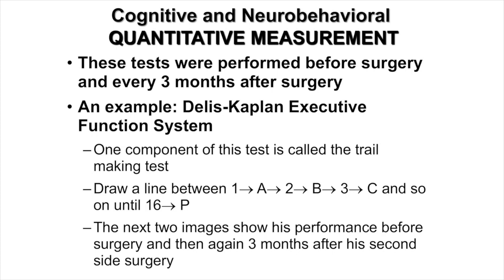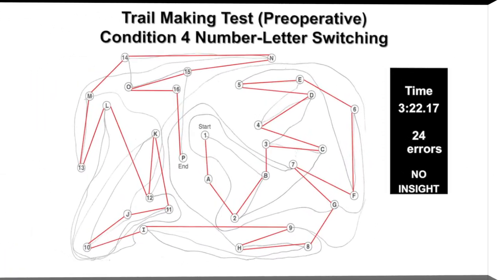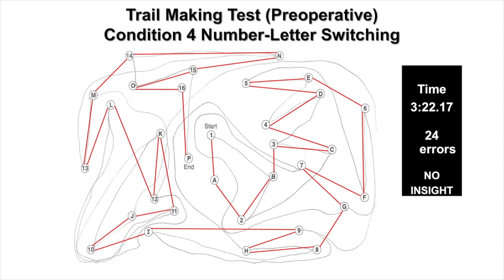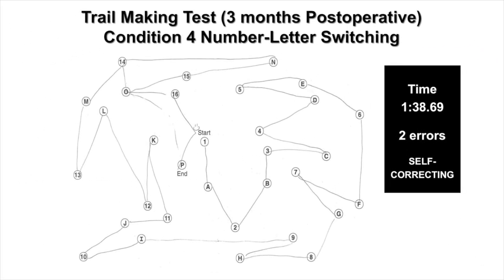In his preoperative test, he performed the Trail Making task in 3 minutes 22 seconds, made 22 errors, and had no insight that he made any mistakes. Three months after his second side surgery, he completed the same task in 1 minute 38 seconds and made only 2 errors — this time self-correcting during those errors, which is important for scoring. This demonstrates significant improvement in cognitive function.